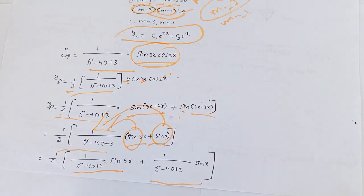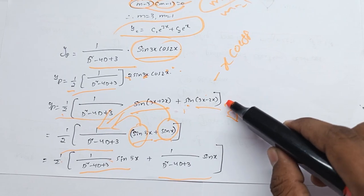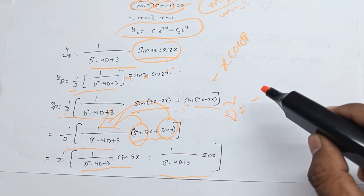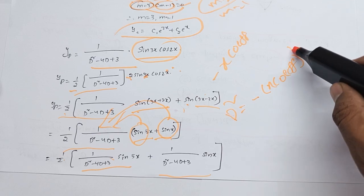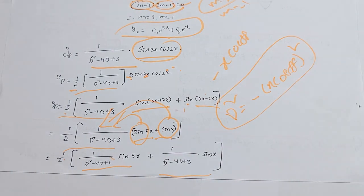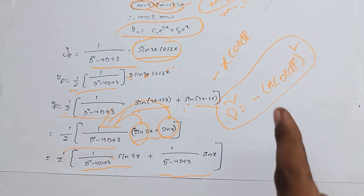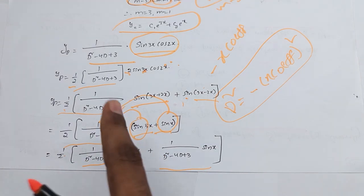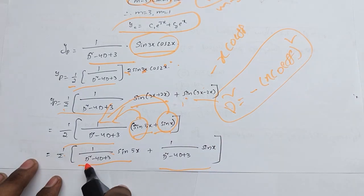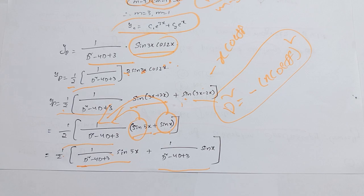Okay, so I will write this step. Actually here we need to apply the sign method. D squared is replaced by minus x-coefficient squared. Minus 5 squared is minus 25. D squared place is minus D squared.